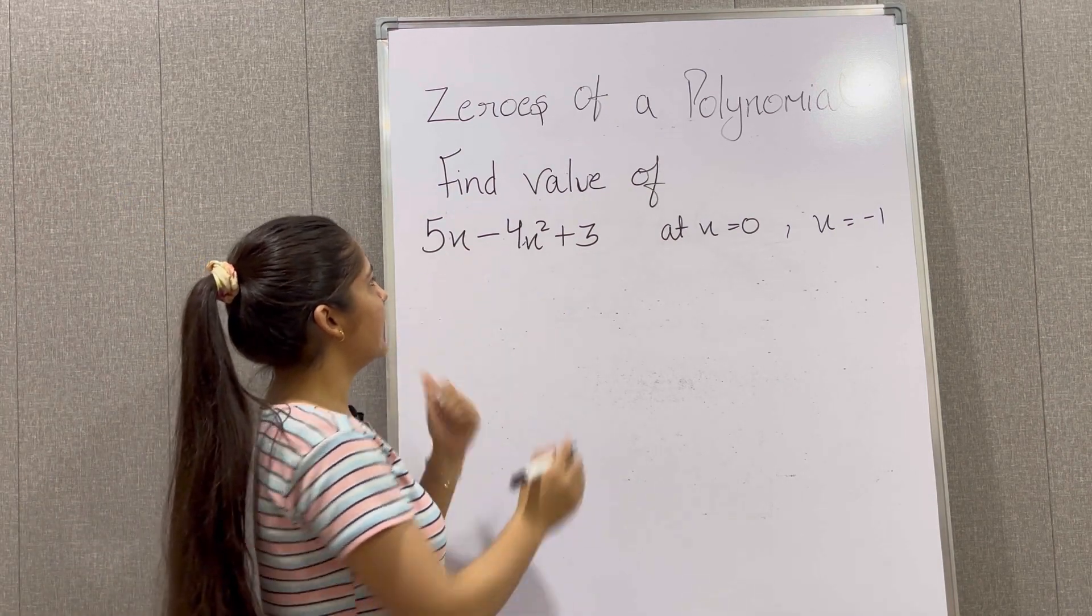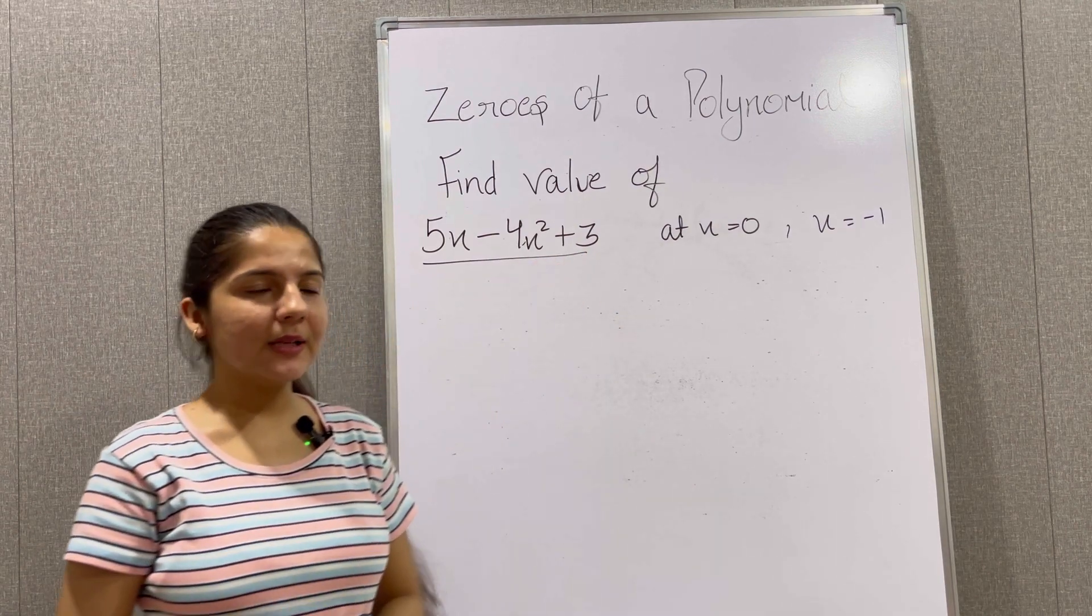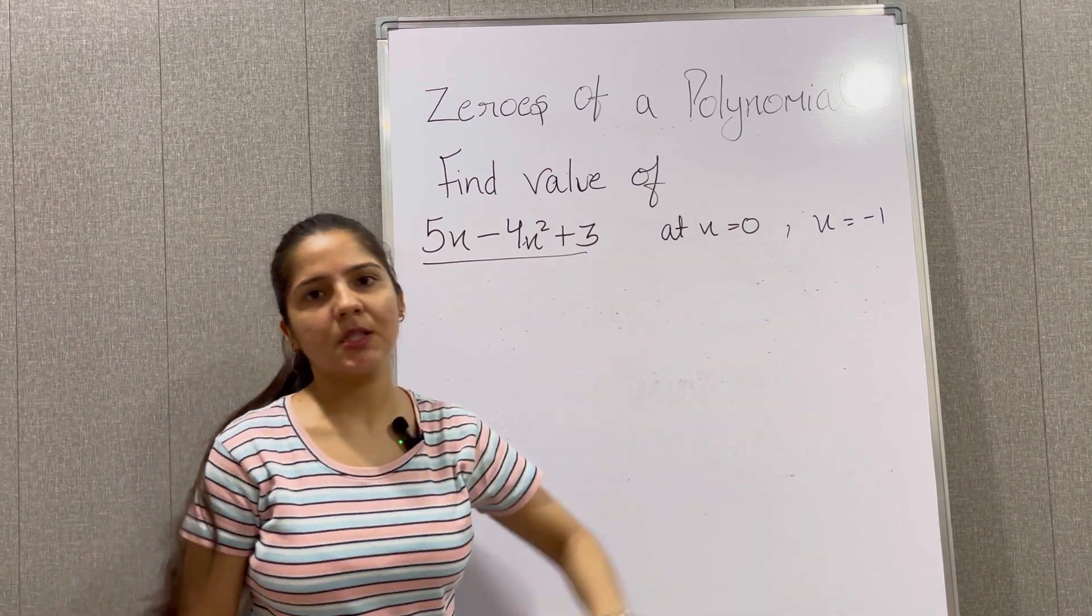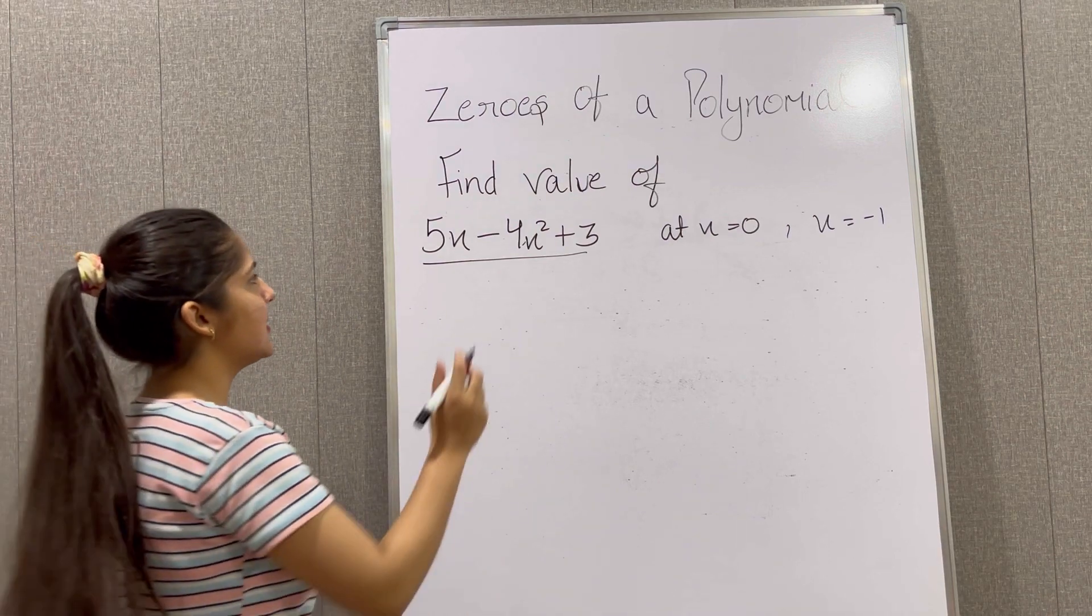Now we need to find the value of this given polynomial by putting x equals 0 once and x equals minus 1. Now let's begin.